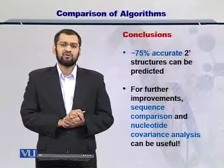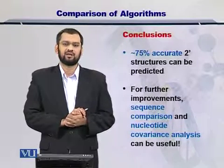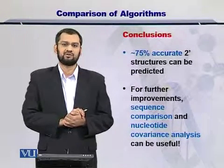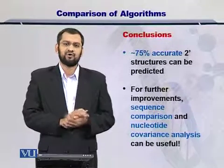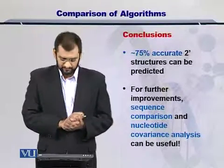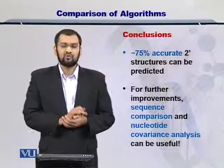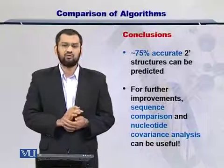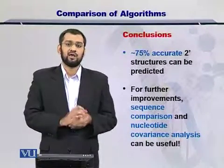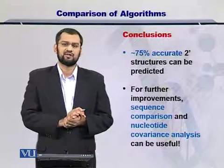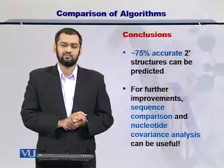These algorithms are known to be 75% accurate in predicting the RNA secondary structure. So there is no perfect algorithm; however, this performance is still very useful. For further improvements, sequence comparisons and nucleotide covariance analysis, as well as the secondary structures that exist in nature and are more frequent, can be extremely useful.